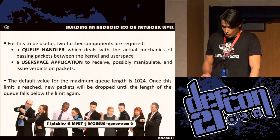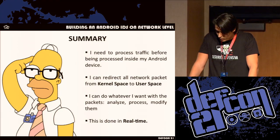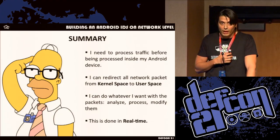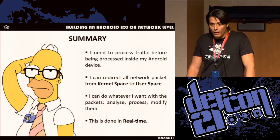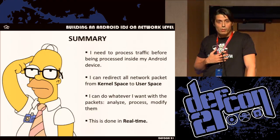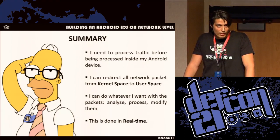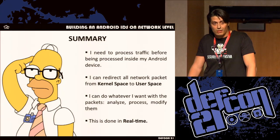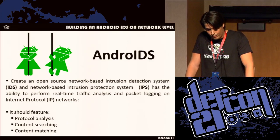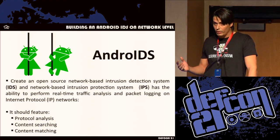So in summary, I'm capable of processing all incoming and outgoing traffic inside my device. I made my tool and had to do some proof of concept for Android. If I'm able to issue a verdict for every packet, maybe I'm not only acting like an IDS — I'm acting like an IPS too. The first release of my tool was in Perl, then I moved to C, then Python, then C again. And then I arrived at the Android IDS — a first approach to create open source software that is a network IDS and a network IPS, performing real traffic analysis and packet logging on the internet protocol.